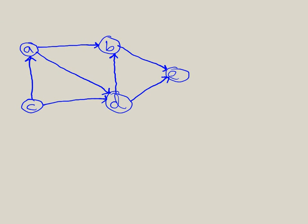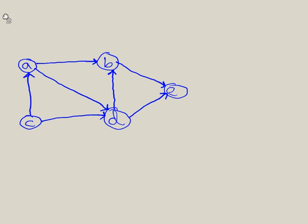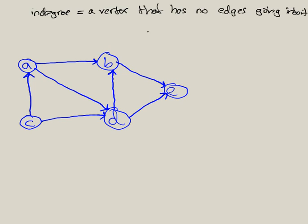Suppose you're given a graph like this. Now, to start off, you want to look for a vertex that has no in-degree. And what that means is, let me define it up here. In-degree means a vertex that has no edges going into it.